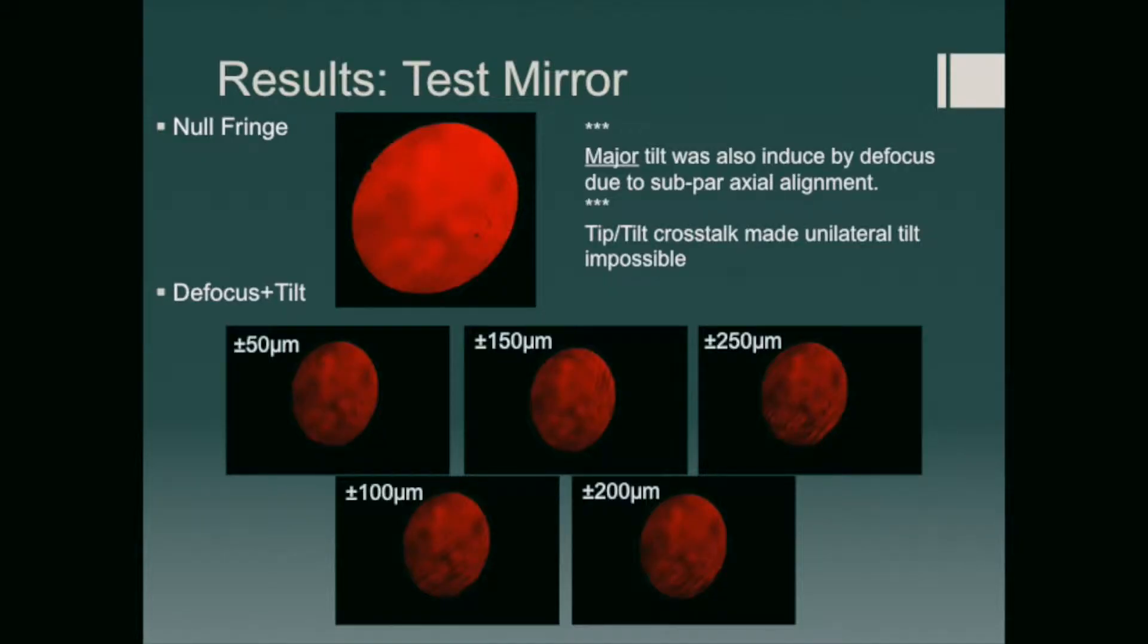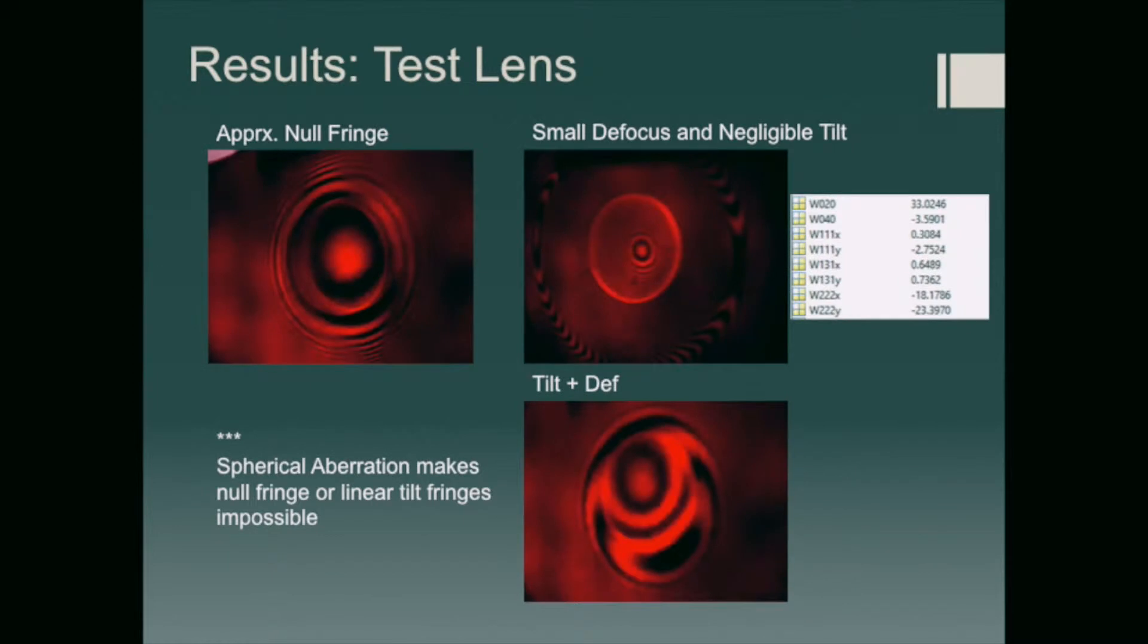So now we're going to talk about our results. You can see from these pictures that we have our null fringe, which is supposed to be the absence of aberration at the focus of the optical element that you're testing. And then we also have our defocus and tilt interferograms. It was impossible for us to get purely defocus or purely tilt because applying defocus resulted in a major amount of tilt due to the non-axial alignment of the system.